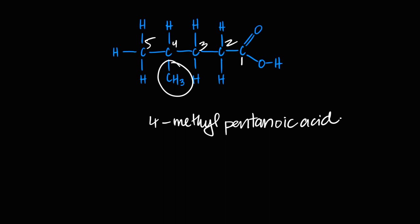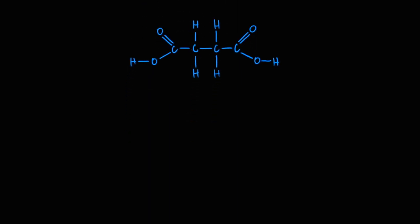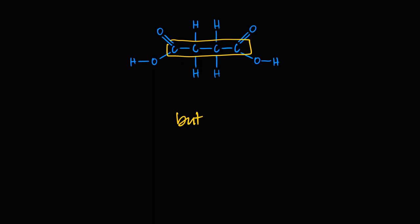If there are two carboxylic acid groups, it becomes a dioic acid. Both acid carbons are part of the parent chain. In this example, the parent chain is four carbons, with acid groups on carbons one and four — no substituents. It's four carbons — 'but' — all single bonds — '-an' — and it's a dioic acid at positions one and four: butane-1,4-dioic acid.